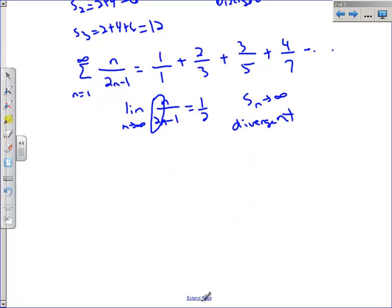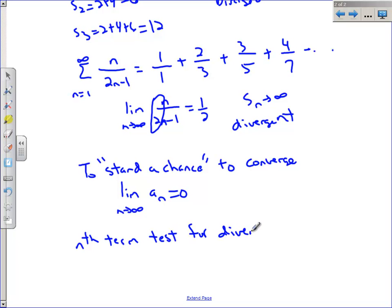So what we're going to need for a series to stand a chance to converge, we need this sequence to go to 0. Otherwise, we're going to keep adding on positive values that are bigger and bigger and bigger. So to stand a chance, I need the limit as n approaches infinity of the a sub n, what's inside the summation, to equal 0. If it doesn't, then it's going to diverge. And this is called the nth term test for divergence. And it says that if the limit as n approaches infinity of your sequence, what's inside your sigma, does not equal 0, then you can be sure that the summation of that sequence diverges. So the nth term test is a test for divergence.